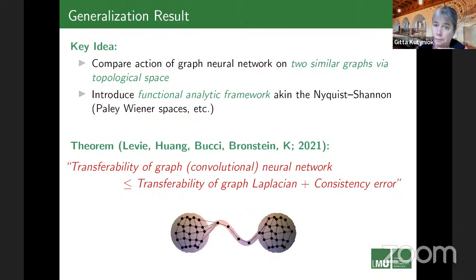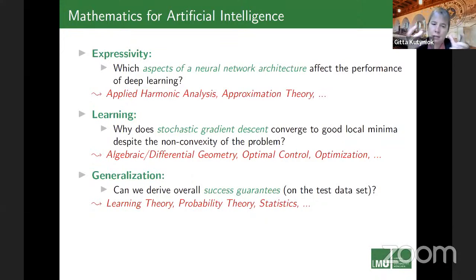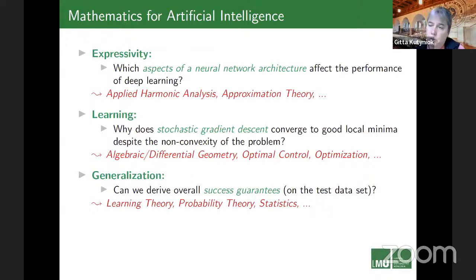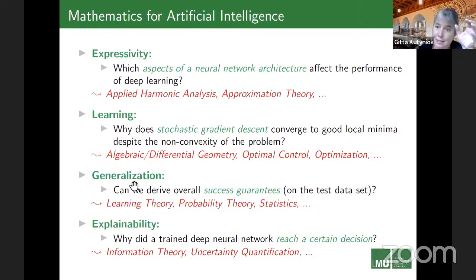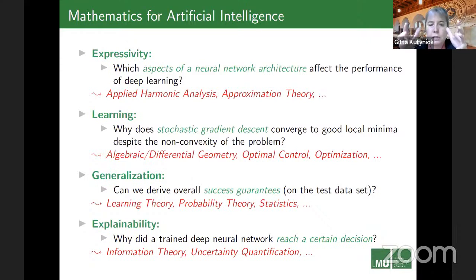We are still very far from understanding all aspects of the overall statistical learning error, particularly generalization. There is a new area called explainability that aims to partly circumvent this problem. Instead of analyzing the network mathematically, it asks: given a trained neural network, how does it reach decisions? This is extremely important for applications.